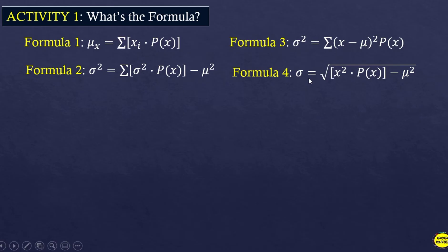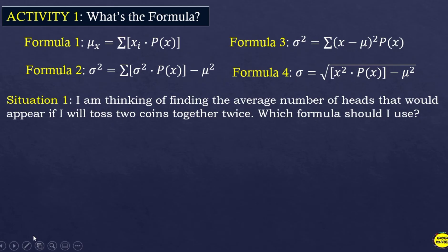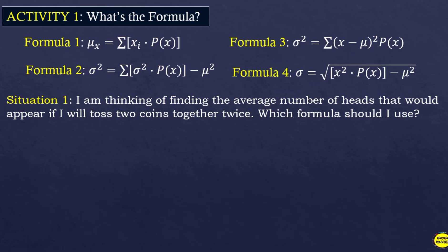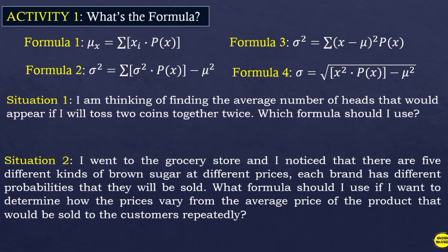In situation number one: I am thinking of finding the average number of heads that would appear if I will toss two coins together twice — which formula should I use? The keyword here is 'finding the average.' Average means expected value or the mean value.